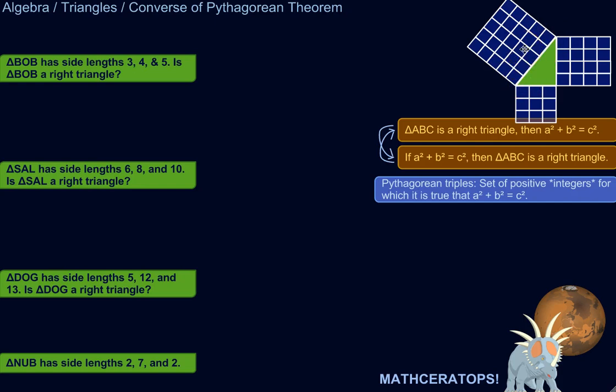Alright, well, the converse is if A squared plus B squared equals C squared, then that triangle is a right triangle. So you can use that to figure out if triangles are right triangles.